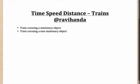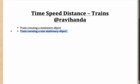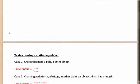Hi and welcome to another session on time, speed and distance. In this session we'll talk particularly about questions which are based on trains — two trains crossing, train crossing a man, man is running, and stuff like that. These questions can be divided into two broad categories: when a train is crossing a stationary object, or when a train is crossing an object in motion.